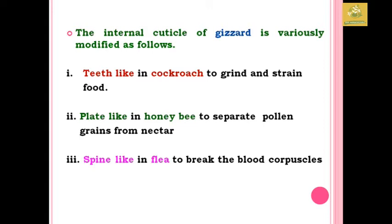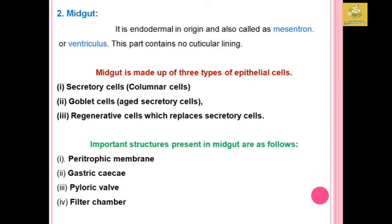The gizzard is variously modified in different insects. In cockroaches it has teeth-like structures which grind and strain the food; in honeybees it has plate-like structures used to separate pollen and nectar from the food; and in fleas it has spine-like structures used to break blood corpuscles.